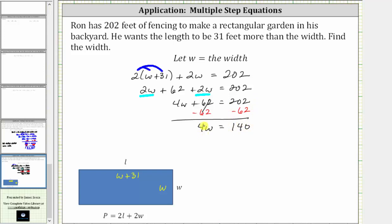And now we multiply or divide to solve for w. Four w means four times w. To undo the multiplication and solve for w, we divide both sides by four. Simplifying, four divided by four simplifies to one. One times w is w. W is equal to 140 divided by four, which is equal to 35.